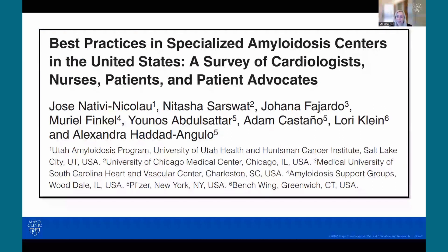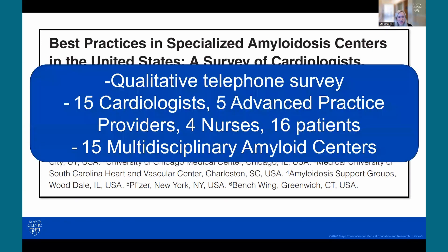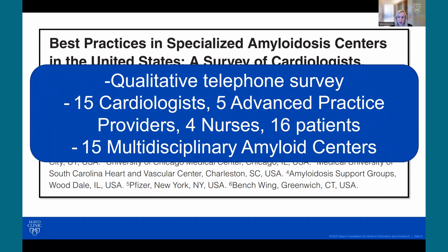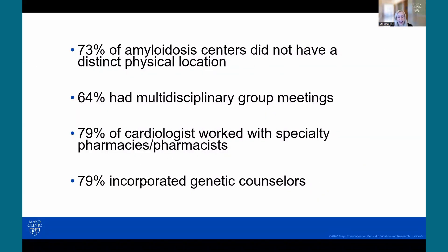My colleague Dr. Jose Nativi recently evaluated the best practices in amyloidosis centers through a qualitative telephone survey that interviewed 15 cardiologists, five advanced practice providers, and four nurses across 15 different multidisciplinary amyloid centers. Sixteen patients were also recruited through the amyloidosis support group nonprofit organization. They found that 73% of amyloid centers did not have a distinct physical location, 64% had multidisciplinary group meetings, 79% of cardiologists worked with specialty pharmacists, and 79% incorporated genetic counselors.